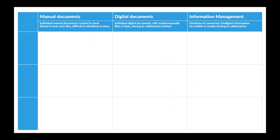The good news is this is not a new concept and not something to be fearful of. If you look at three stages of evolution — manual documents, digital documents, and information management — this tracks how things have evolved in construction. Manual documents were individually handwritten, stored in paper copy and arch files. More recently we've moved to digital documents — Excel, drawings, AutoCAD, Word. But they're still individual documents, not connected, though drawn digitally, and not easy to share as they are individual silos of data.